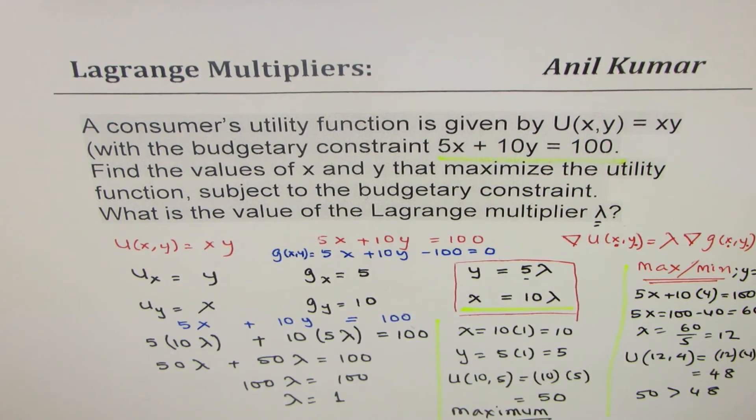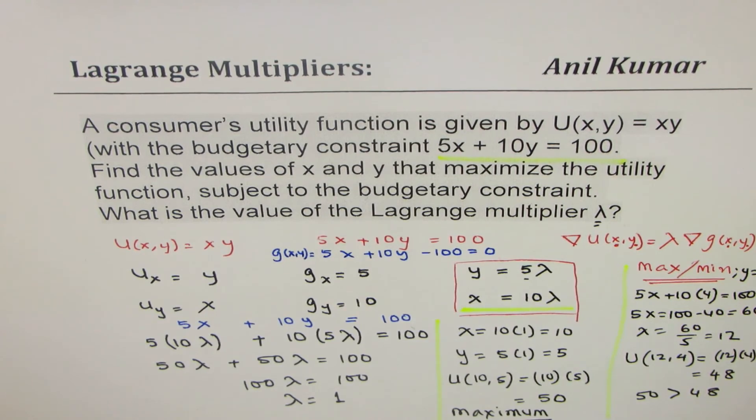So that is how you can actually also show that we have maximized the utility function, subject to the budgetary constraint. So I hope the steps are absolutely clear. It basically is an example which helps you to understand how to apply the Lagrange method for maximizing when one budgetary constraint is given to us. Feel free to write your suggestions and your comments. Post questions as always. Thanks a lot.